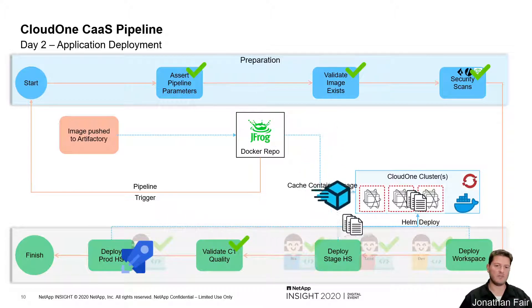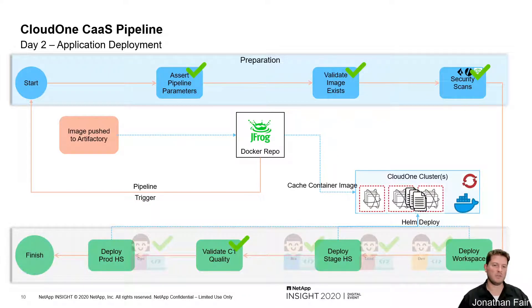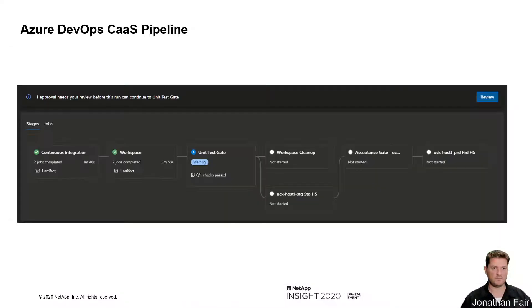From the time the developer pushes the image to the time it is deployed in production can be completed in only 15 to 20 minutes. This is a small example of what our CI/CD pipeline looks like in Azure DevOps. As you can see, it has been deployed to the workspace and the developer can perform any testing before deciding to approve or reject the next stage.